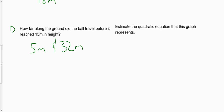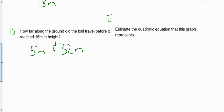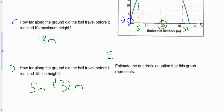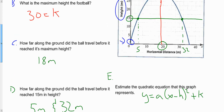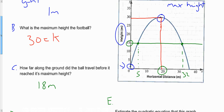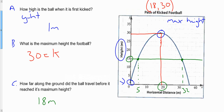The last question — we'll call this question E — is to estimate the quadratic relation that this graph represents. We're going to write this in vertex form: y equals A times (x minus H) squared plus K. Based on this graph and the information we've pulled from it, we have to estimate our A, H, and K values.